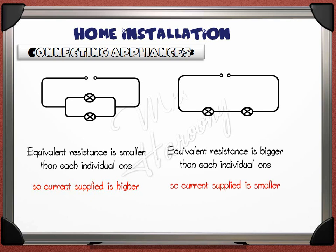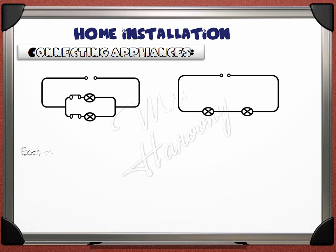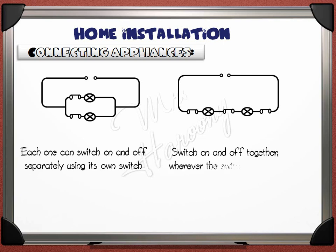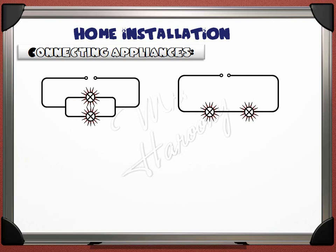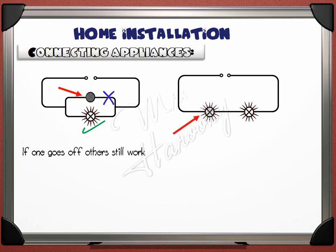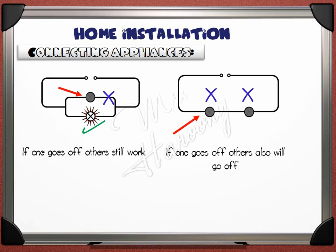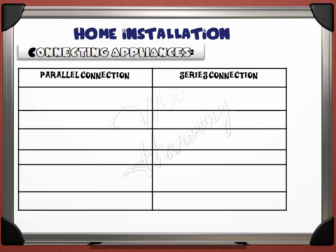Another point is controlling the bulbs by switches. In parallel, each one can switch on and off separately using its own switch. But in series, they switch on and off together, wherever the switch is placed. The last point: what if one of the bulbs is damaged and goes off? In the parallel connection, if one bulb is damaged, the second bulb will continue working since it still has a direct electric connection to the supply — if one goes off, others still work. In series, if one bulb is damaged, it cuts the electric connection of the whole circuit — if one goes off, the others also go off.